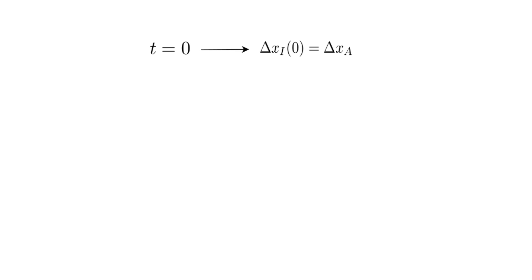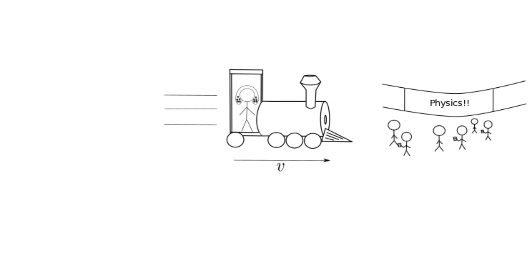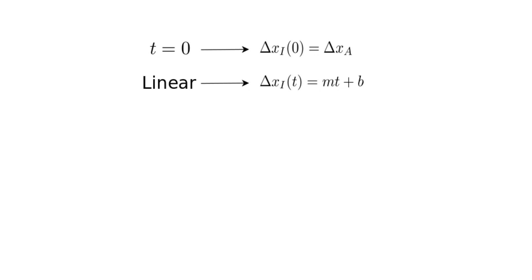This is a good start since we can see that there is already a relationship between the experiences of Isaac and Albert. Since the conference will be getting closer to Isaac at a steady rate, we know that delta xi should be a linear function of time, looking like delta xi is equal to mt plus b. We already know that b is equal to delta xa, since this is Isaac's starting point, and we can guess that m is related to v.